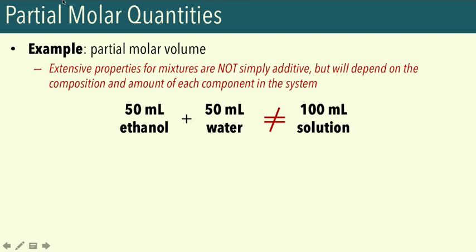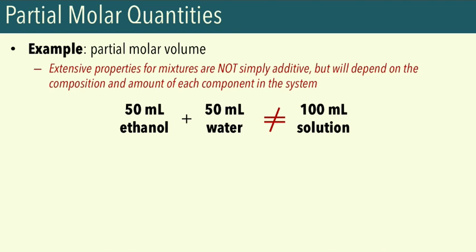This is because ethanol and water interact with one another. When we form a mixture, the ethanol and water molecules interact in a way different from when we have the pure components separately. It's possible that the molecules in the mixture allow more or less space between them, manifesting in a different volume for the mixture. Partial molar quantities tell us how these components contribute to the total extensive property when they interact to form a system together. Note also that these interactions are unique based on what components are in the system.